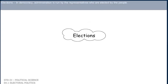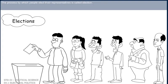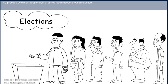Elections. In a democracy, administration is run by the representatives who are elected by the people. The process by which people elect their representatives is called election.